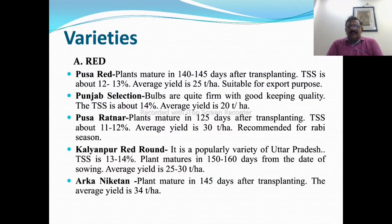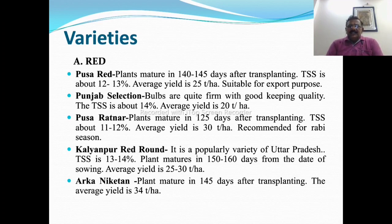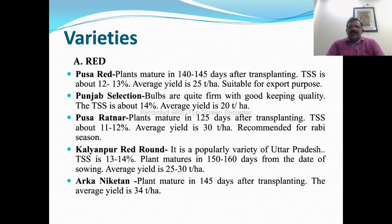Different important varieties of onion include red varieties. Pusa Red matures in 150 to 155 days after transplanting, TSS is about 12 to 13 percent, average yield is 25 tons per hectare and it is suitable for export. Punjab Selection has strong bulbs with good keeping quality, TSS about 14 percent and average yield 20 tons per hectare. Pusa Ratnar matures in 125 days after transplanting, TSS 11 to 12 percent, average yield 30 tons per hectare and is recommended for Rabi cultivation.